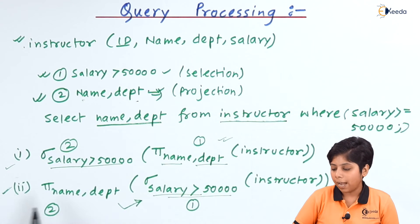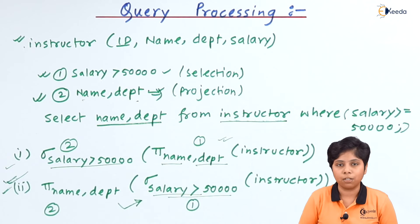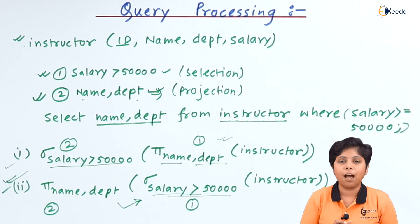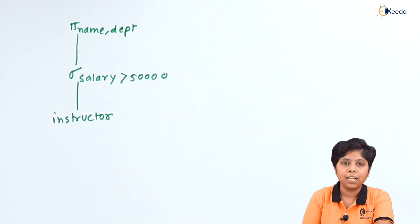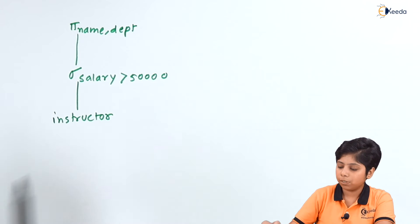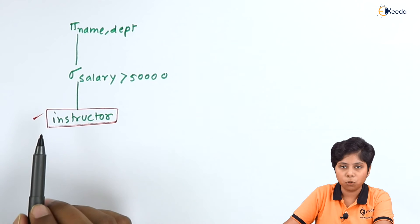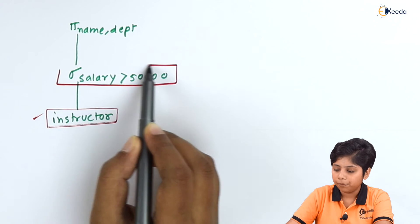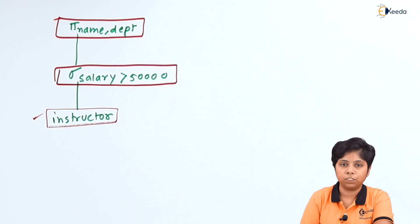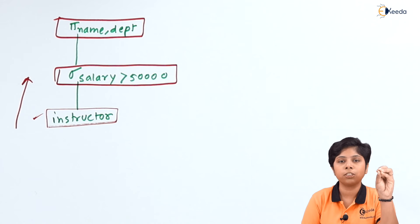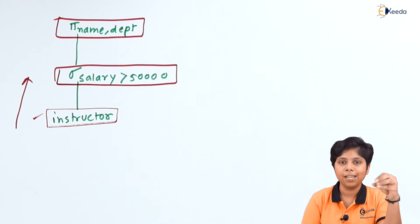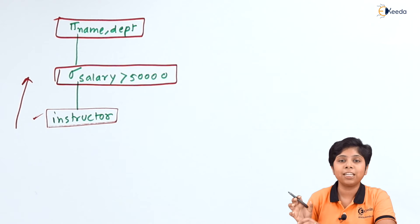The evaluation plan builds up the steps by which it will evaluate the query. If we select the second relational algebraic expression, we go with that evaluation plan. The plan shows: the instructor relation is the input, then we perform the selection operation, and then the projection operation. It follows a tree-like structure going from bottom to top, where the root node is the outermost operation and the leaf nodes are the initial operations.